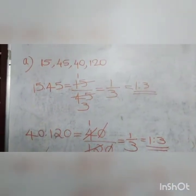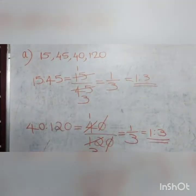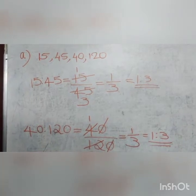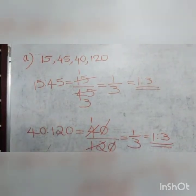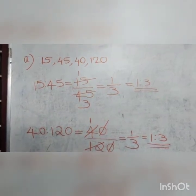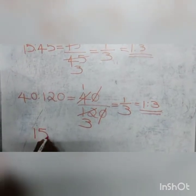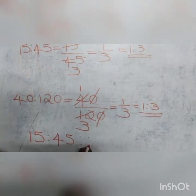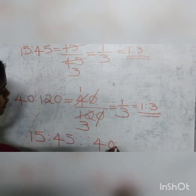Now check both ratios. Both are equal to 1 is to 3. Since both ratios are equal, we can say that 15 is to 45 and 40 is to 120 are in proportion. We can write this proportion as 15 is to 45 is in proportion with 40 is to 120.